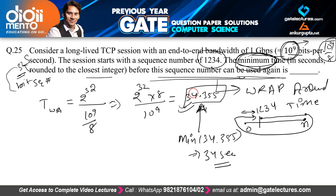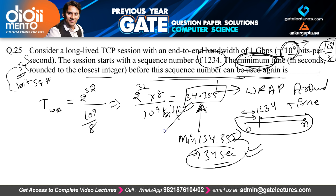Since the bandwidth is given in bits per second, the wrap-around time is 34 seconds. If asking for maximum time it would round up to 35, but for minimum it is 34 seconds. In the next video we will start with the two-mark questions from question number 26 to 55.